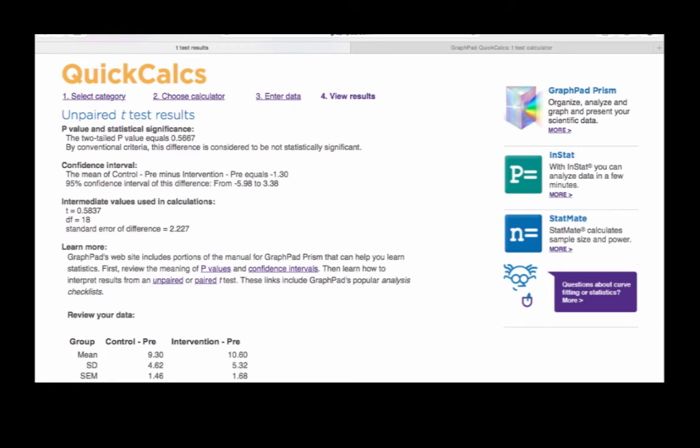For my example, at the five percent significance level my p-value is greater than 0.05. Therefore we accept the null hypothesis: there is no significant difference between the two groups before the study.